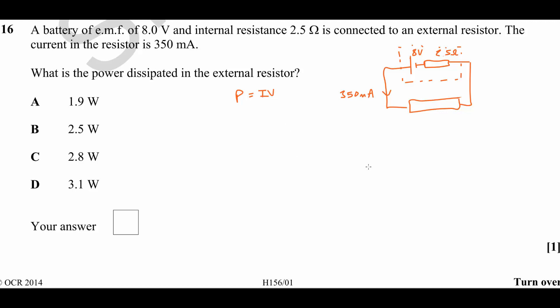However, we don't know the voltage across that resistor. It's not 8 volts because some of these volts are being dropped across the internal resistance of the battery. We need to find out the terminal voltage V across the whole battery.